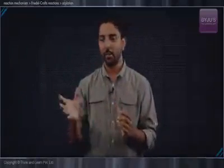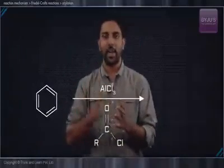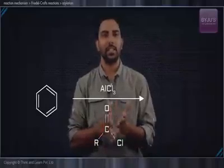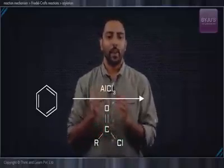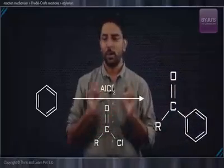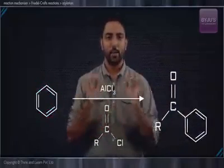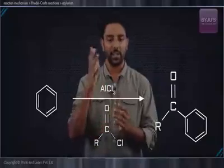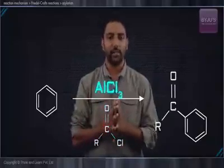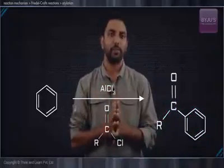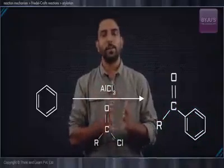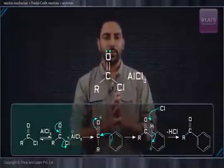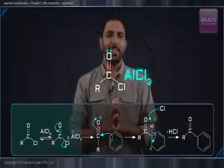So we have the benzene ring and we have an acyl halide and a suitable anhydrous AlCl3, which is the Lewis acid, and we have the products. We have the substrate here, and on either side of the arrows we have the reagents — the acyl halide and the Lewis acid — and we have the final product.